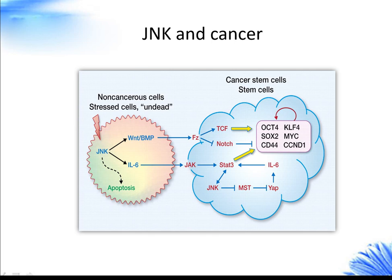JNK is implicated in oncogenic transformation. A role for the JNK pathway in tumorigenesis is supported by the high levels of JNK activity found in several cancer cell lines. The most insightful evidence for a role of JNK/SAPK signaling modules in cancer has come from the identification of MKK4 as a putative tumor suppressor.